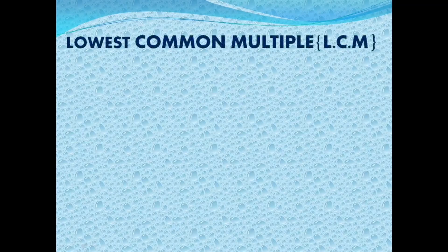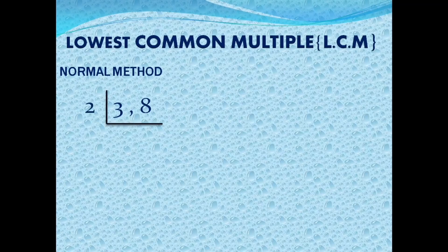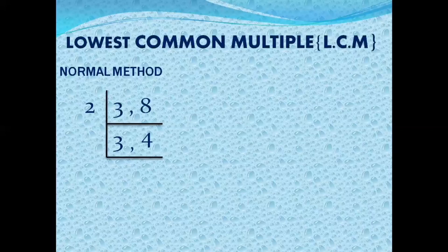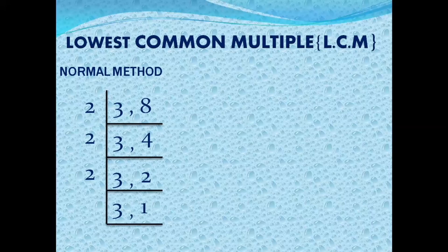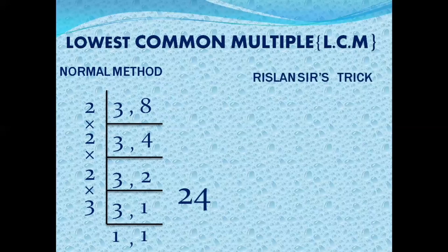Next question: LCM of 3 and 8. Normal method — divide by 2: 3 can't divide, 8 divided by 2 is 4. Again by 2: 3 repeats, 4 divided by 2 is 2. Again by 2: 3 repeats, 2 divided by 2 is 1. Then 3 divided by 3 is 1. Multiply: 2×2×2×3 = 24. LCM is 24.